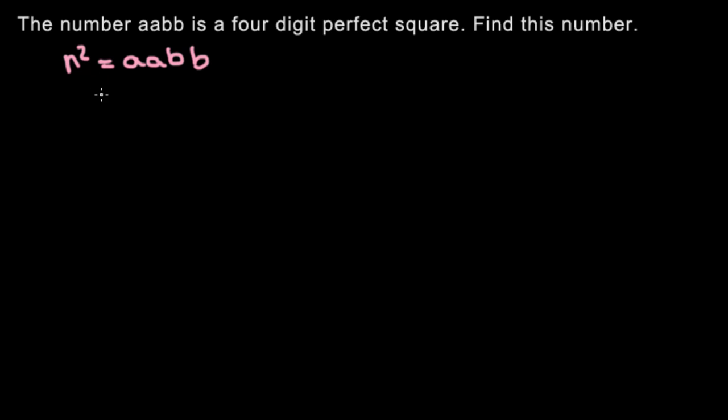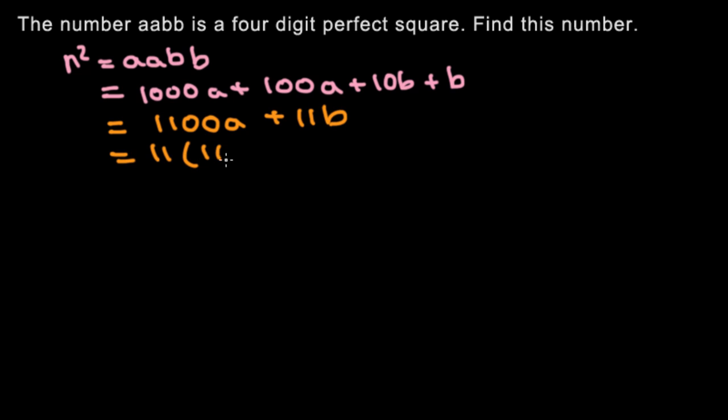So we can rewrite this in an expanded form where we use powers of 10 to represent this number as 1000A plus 100A plus 10B plus B. We can combine these two and combine these two together. So we can rewrite this as 1100A plus 11B. And let's factor out the eleven. And we get 11 times (100A plus B).